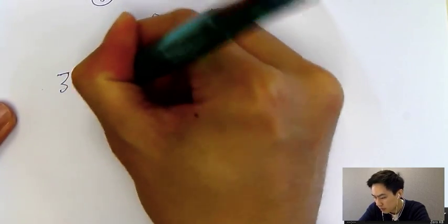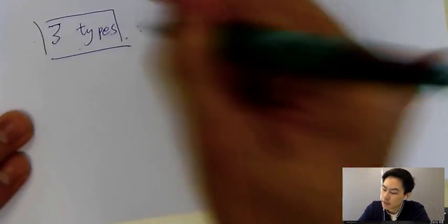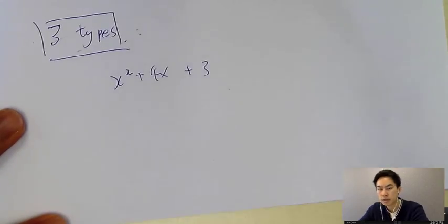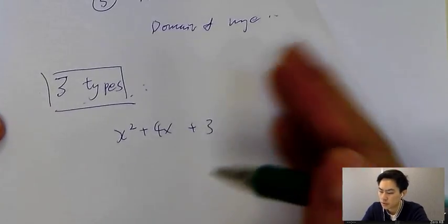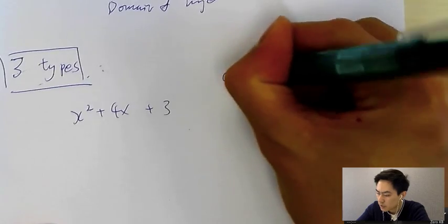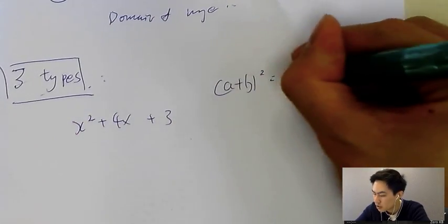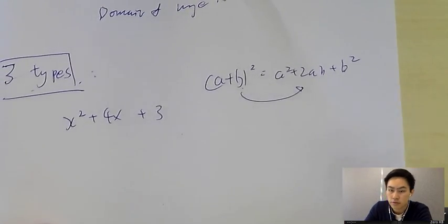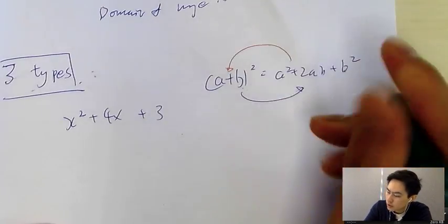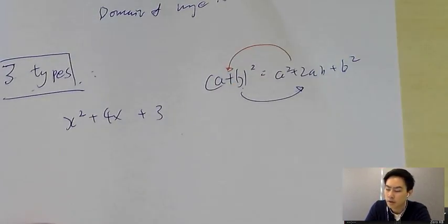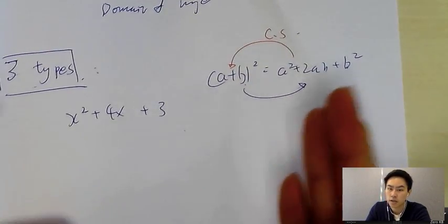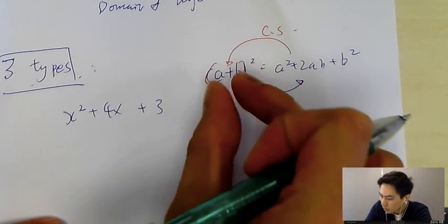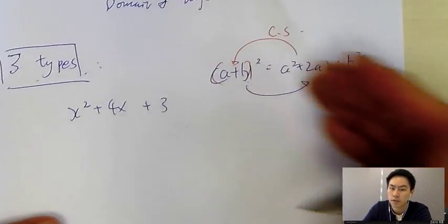There are only three types of completing the square. First, you need to understand what it means. We know that (a + b)² expands to a² + 2ab + b². This process in reverse — changing those three terms back into one bracket — is called completing the square. You make it into one complete whole thing and then square it.